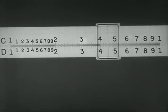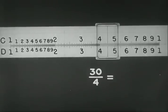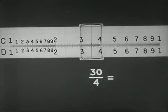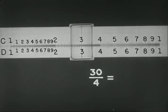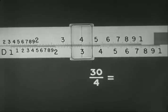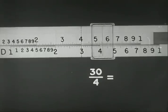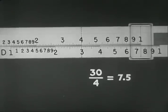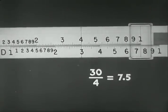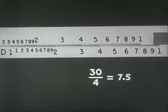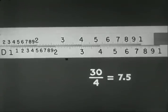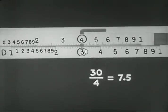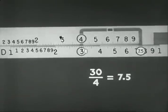To review an example in division, say 30 divided by 4: first find 3 on D, and to it slide 4 on C. Move the hairline to the index, and read the answer 7.5 on D. Again, the ciphers and decimals required are added mentally. 30 divided by 4 equals 7.5.